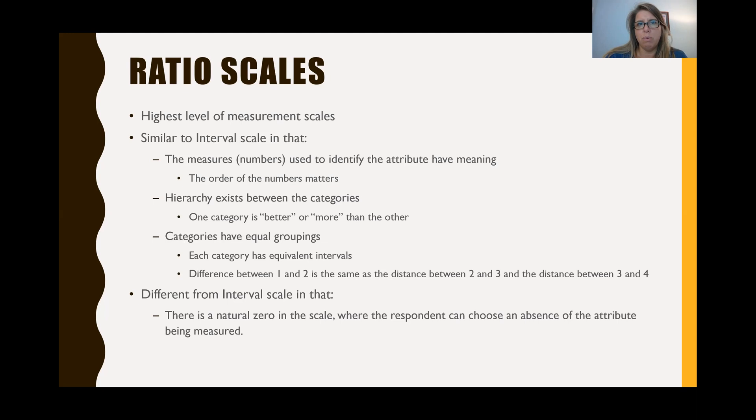Even though it had a zero point, the intervals were not equal. So it doesn't make it a ratio scale. If it has equal groupings, the hierarchy, and the measures have meanings, and it has that zero point, then it's a ratio scale. For example, age can be considered a ratio variable because you could always be zero years old. It's very unlikely, but you could.